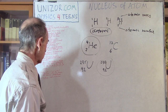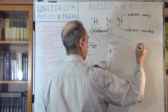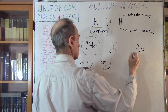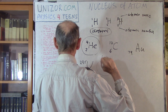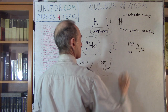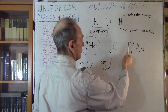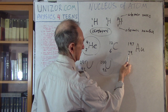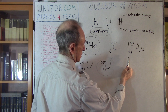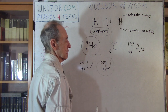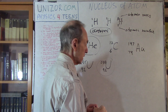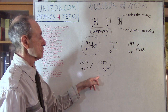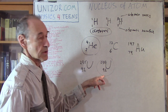We have covered a couple more examples. This is gold — Aurum in Latin. It has 79 protons and the atomic mass is 197. So the number of neutrons is 118 — that's 118 neutrons and 79 protons. As you see, the numbers are different. Neutrons are significantly more than protons.